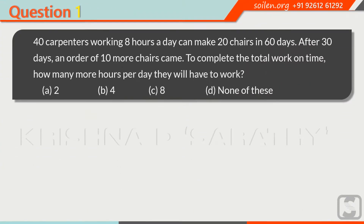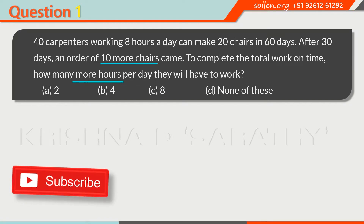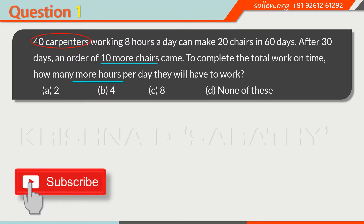Let us take our first question. 40 carpenters working 8 hours a day can make 20 chairs in 60 days. After 30 days, an order of 10 more chairs came. To complete the total work on time, how many more hours per day will they have to work? Here, we have more work to be completed in more hours per day, and the number of persons remains the same.